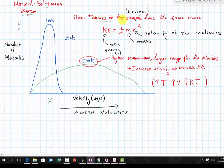First of all, the molecules in this sample have the same mass, because we are trying to look at the effect of temperature on the kinetic energy of molecules. Here we have the equation for kinetic energy: KE = 1/2 mv². The m is the mass of the molecules, and v is the velocity of the molecules.